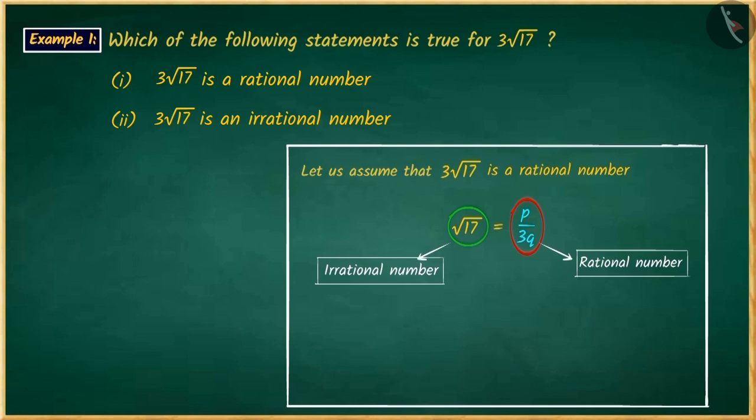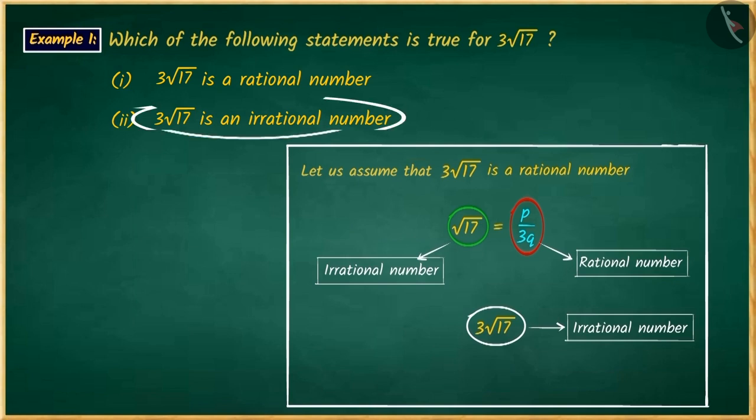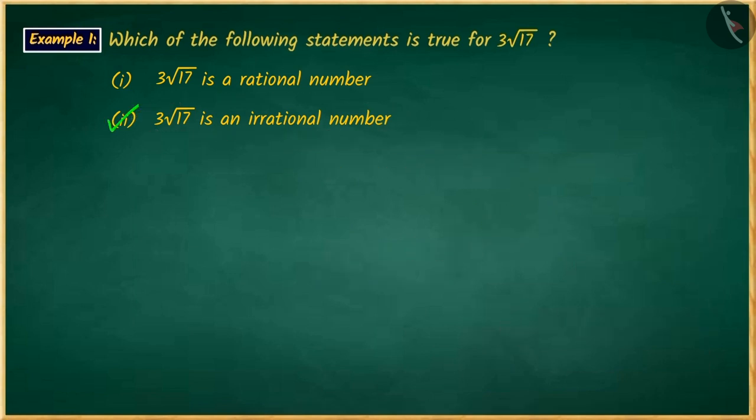This contradiction was caused due to our misconception, because we considered the square root of 17 as a rational number. Therefore, 3 square root of 17 would also be an irrational number. Hence, option 2 is the correct answer.